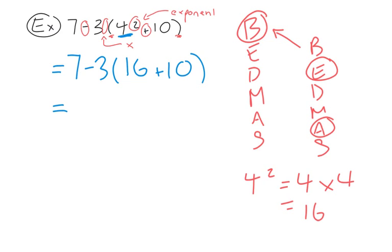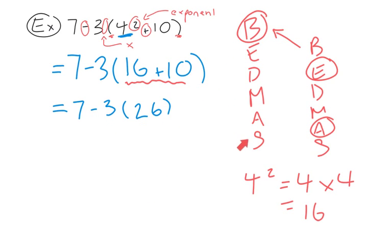In our next step we continue to look within the brackets and take 16 and add 10 to get 26. At this point we are left with two operations: multiplication and subtraction. According to BEDMAS we do multiplication first and then subtraction.